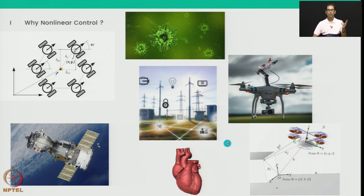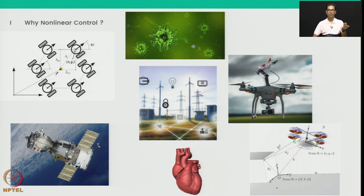All of these are in fact nonlinear systems, and if you want to manipulate the behavior of any of these — say using medication for the heart, electrical supply for the smart grid, disease control mechanisms for infection spread, or thrusters for satellites — the entire purpose of doing any modification in the behavior of the system is achieved via nonlinear control.